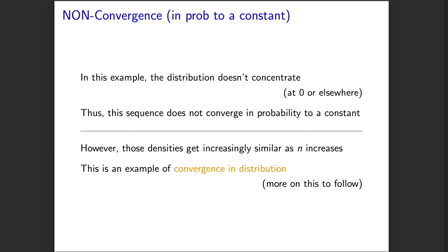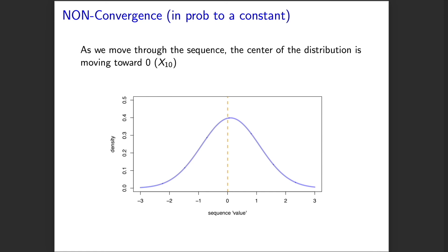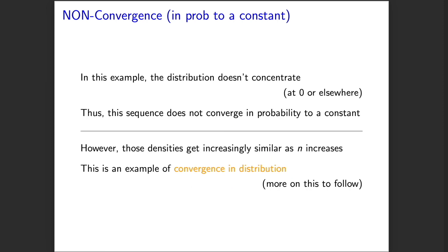Looking at those densities, they are getting closer and closer to a normal with mean zero and variance one. In a sense, the random variables aren't converging to a constant, but their distributions are converging to a fixed distribution. That's an example of convergence in distribution, and we will discuss that much more in what follows.